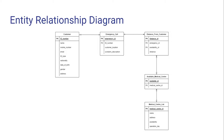Zero or one customer with one and only one emergency call. The emergency call entity consists of emergency ID as the primary key, ID number of customer entity as foreign key, customer location and symptom description attributes. One and only one emergency call with one or many distance from customer.